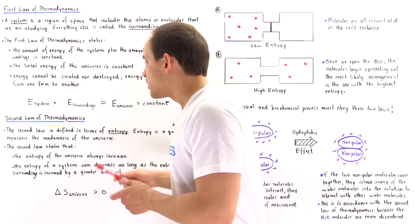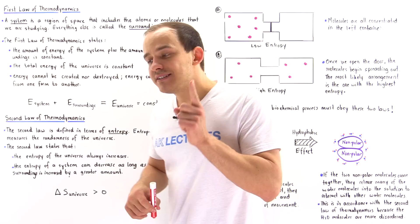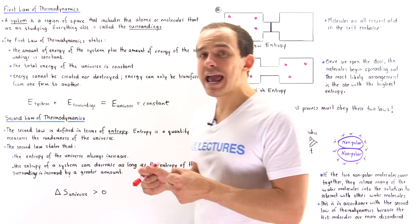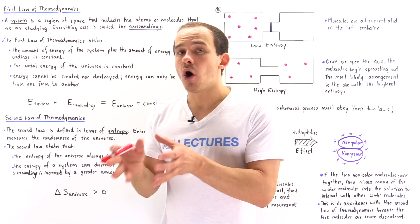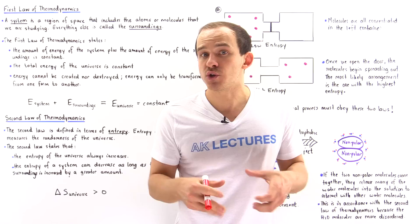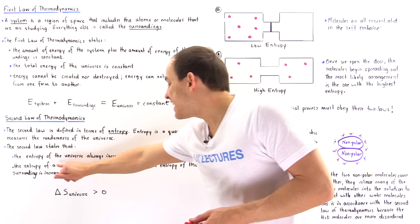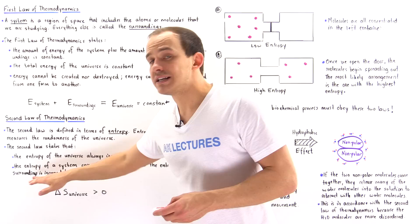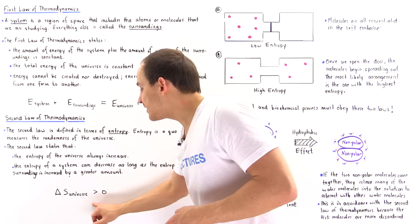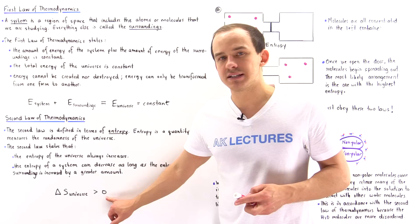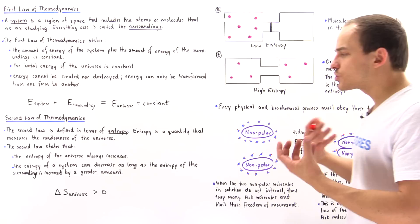The second law of thermodynamics states that the entropy of the universe always increases. That doesn't mean the change in entropy of a system cannot be negative — the entropy of a system can still decrease, as long as the entropy of the surroundings increases by a greater amount, so that the change in entropy of the universe is always equal to a positive value. It is never equal to a negative value.